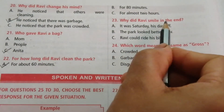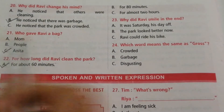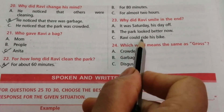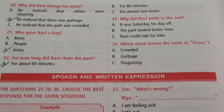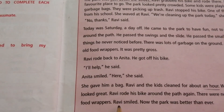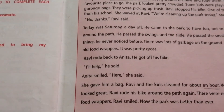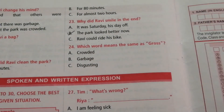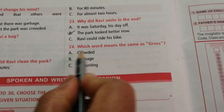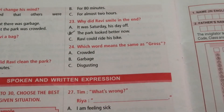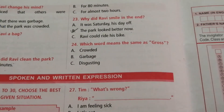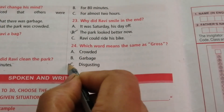Question 23: Why did Ravi smile in the end? Options are: it was Saturday his day off, the park looked better now, Ravi could ride his bike. From the passage: 'Ravi smiled. Now the park was better than ever.' The answer is B — the park looked better now. Question 24: Which word means the same as gross? Options are crowded, garbage, disgusting. The answer is C — disgusting.